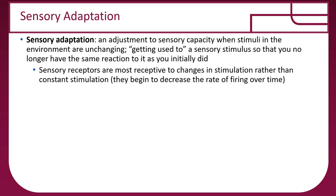Sensory adaptation is an adjustment our senses make when stimuli in the environment are unchanging — getting used to a sensory stimulus so you no longer have the same reaction as you initially did. When you are seeing or hearing something, you are sending action potentials from your sensory organs through your spinal cord up to your brain. This takes time and a lot of energy, so our senses are really there to alert us to things in our environment.